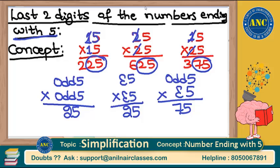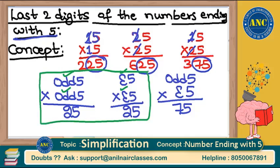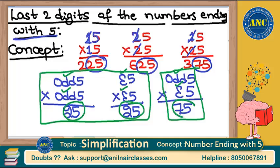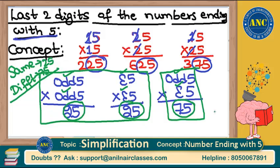Very easy way to remember: odd and odd are the same family; even and even are the same family. If it is the same family ending with 5 multiplied, the last two digits will always be 25. Odd and even are different families. If it is a different family ending with 5 multiplied, the last two digits will always be 75. Same family is 25; different family is 75. If you remember this, you can solve these questions very easily.